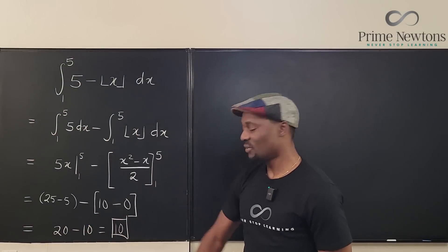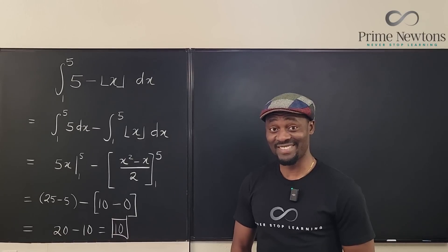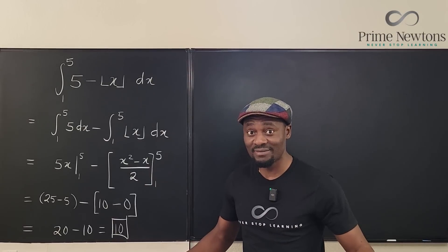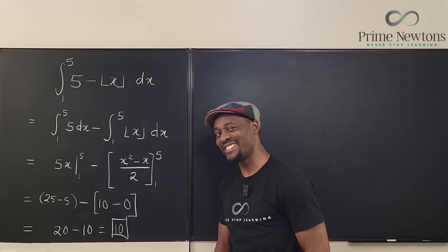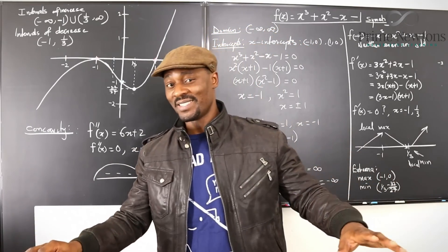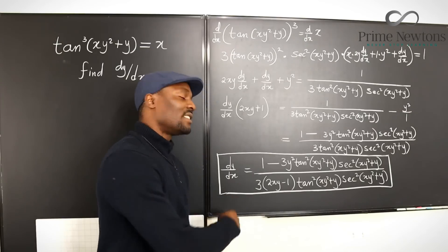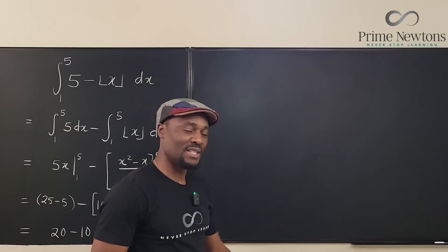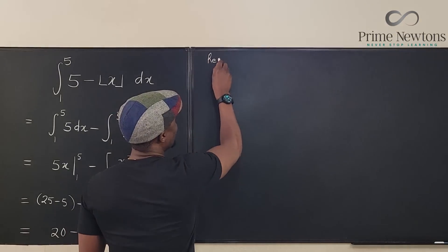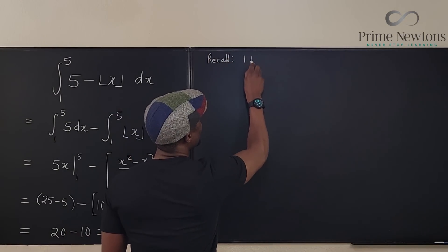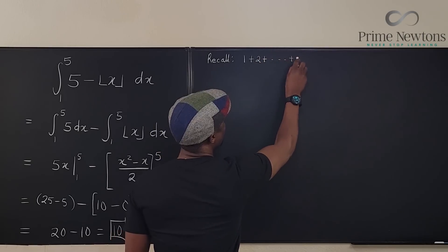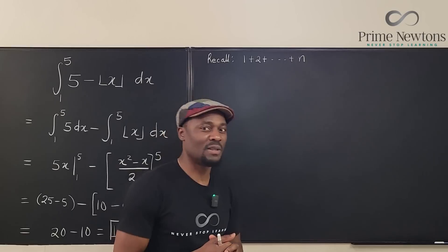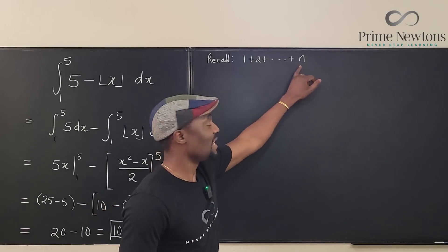Now let me explain how I got to that antiderivative — this is the crux of the entire video. Recall from your pre-calculus days that 1 plus 2 plus … plus n, the sum of the first n integers, equals a formula you used in Riemann sums.